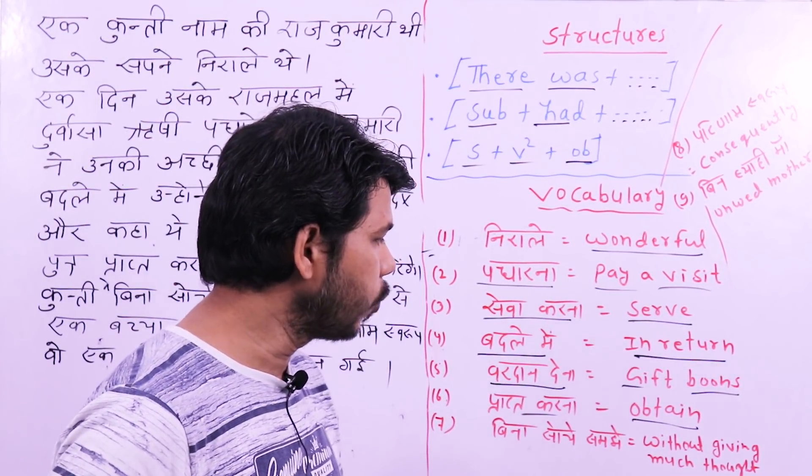So first take a screenshot of this. After that I will show you the translation, and you also do it. Come on guys, take the screenshot. Now let's see. एक कुंती नाम की राजकुमारी थी — so start with 'there': there was a princess named Kunti.